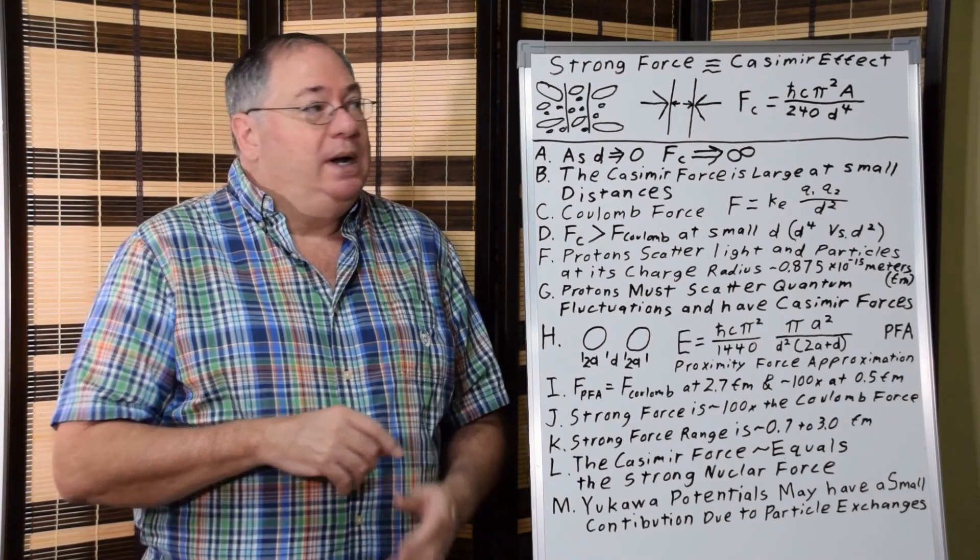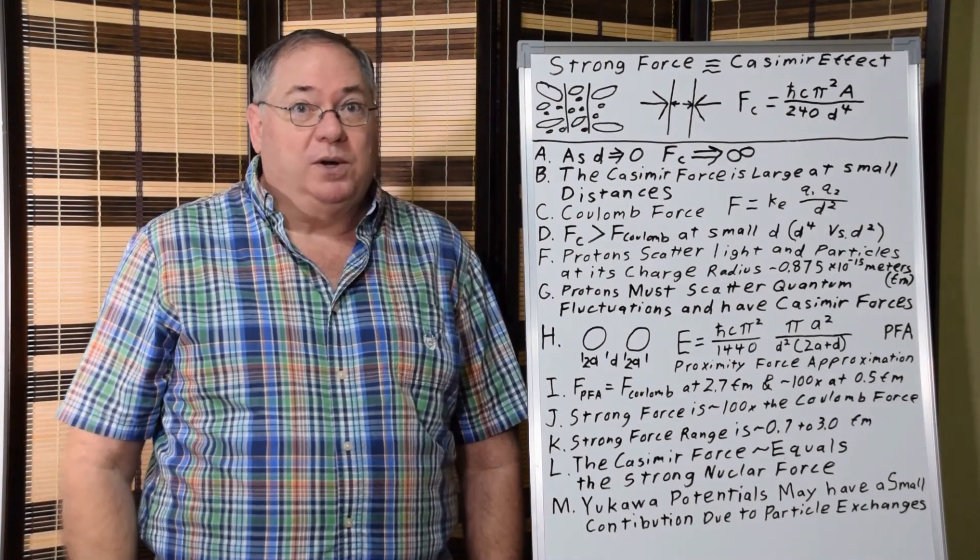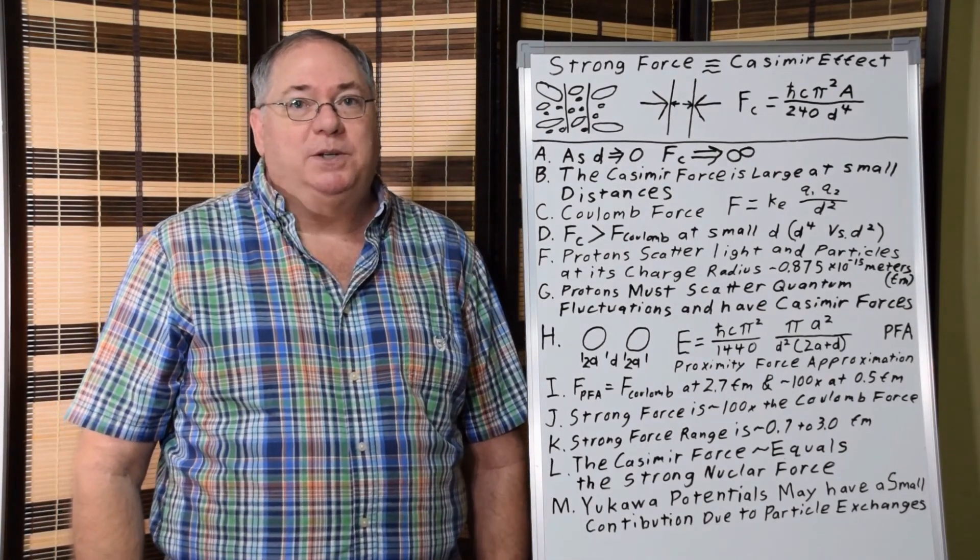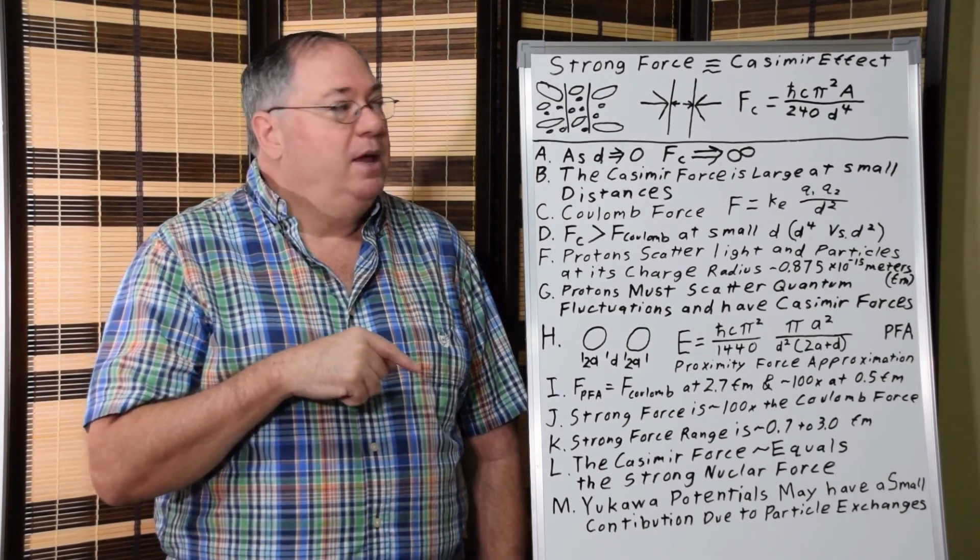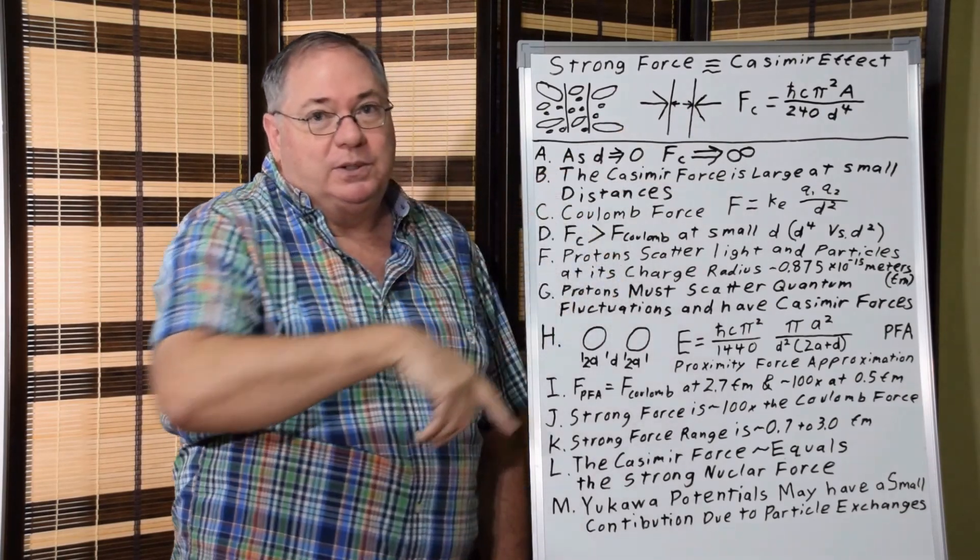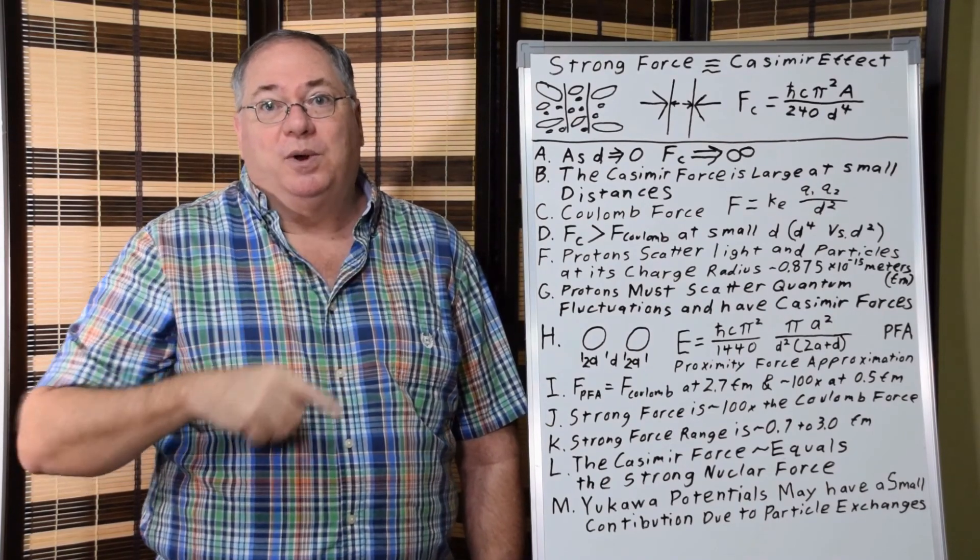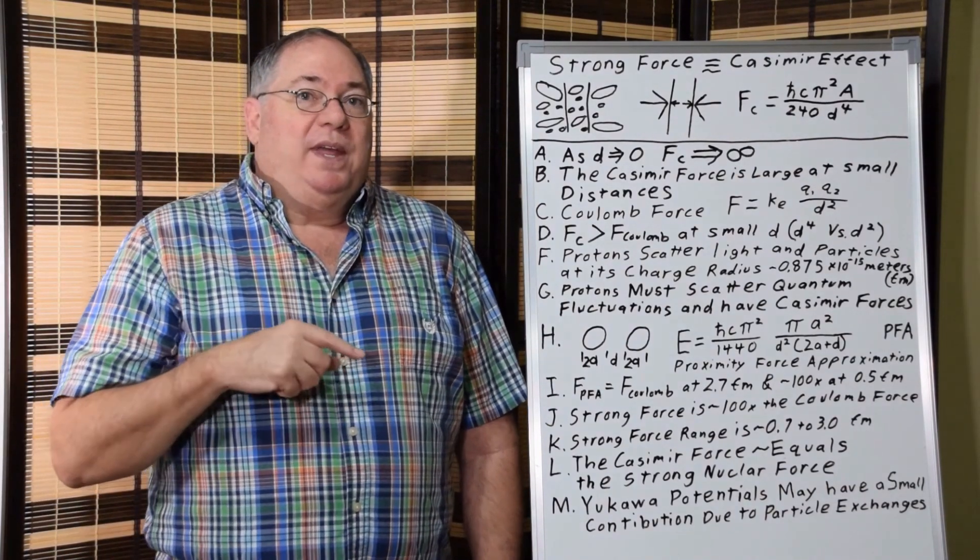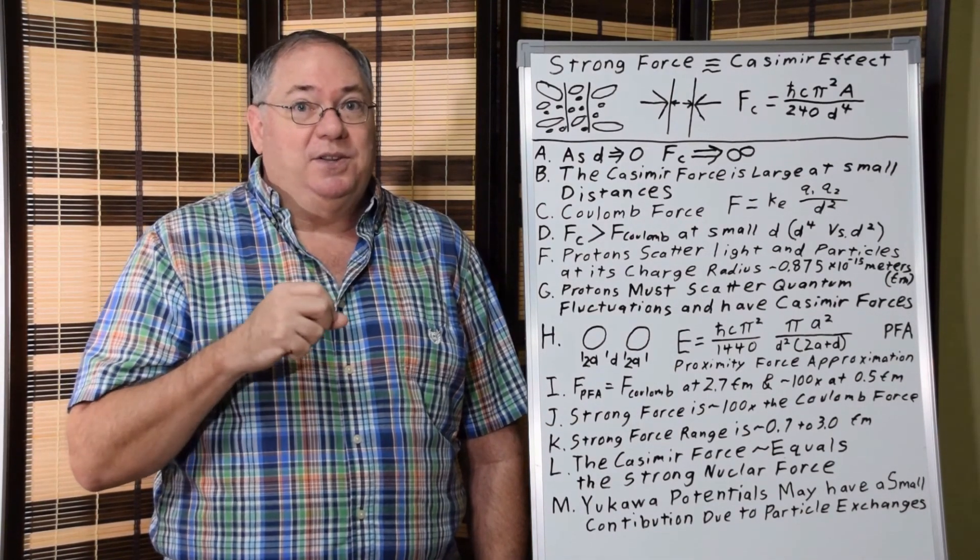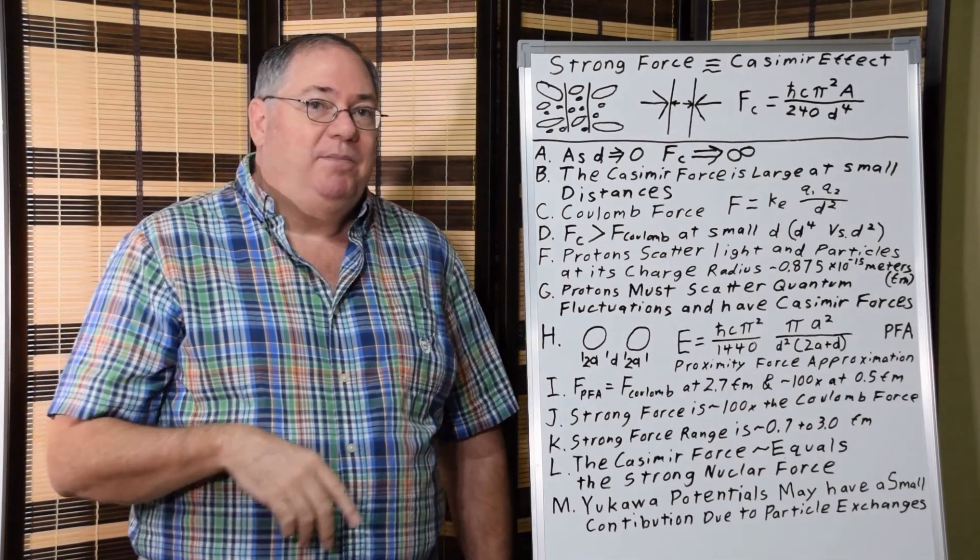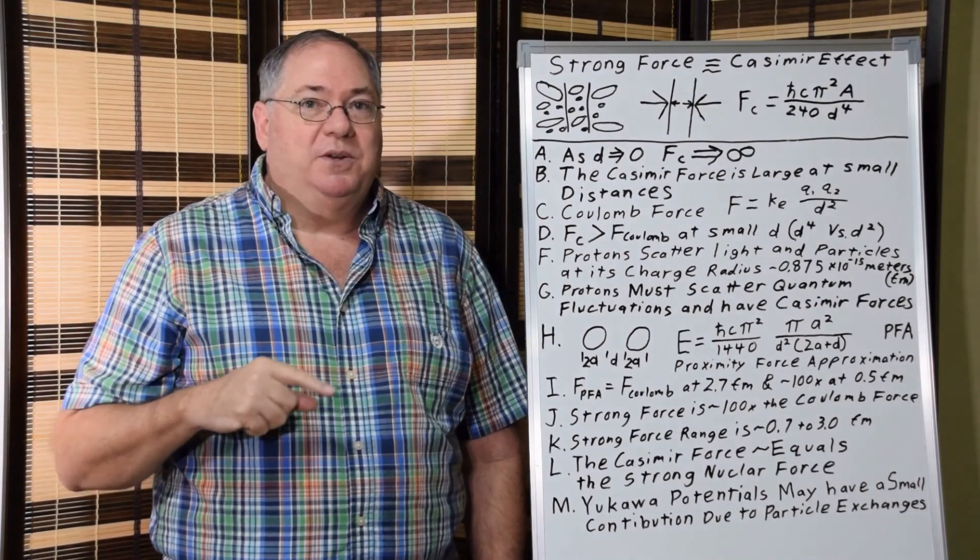And so given the differential in pressure, Polder, out of Casimir's partner, he determined the actual calculation for the two-plate example, which is this here. The Casimir force is h bar c pi squared a over 240 d to the fourth. And the important thing here to know is it has d to the fourth in its denominator, the distance to the fourth. That's the distance between the plates. So as the distance goes to zero, the Casimir force goes to infinity.